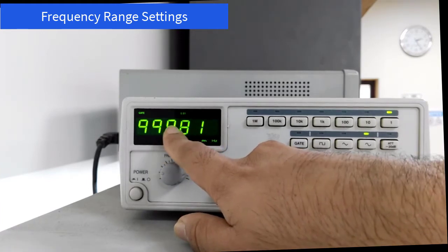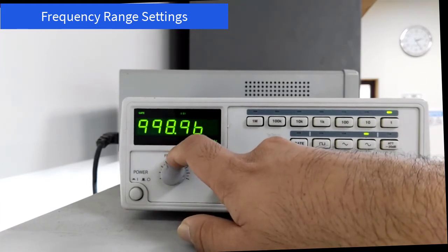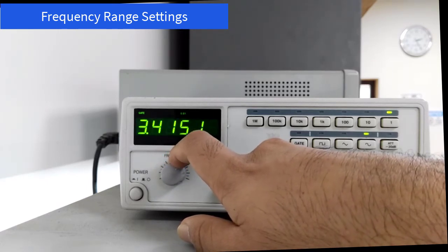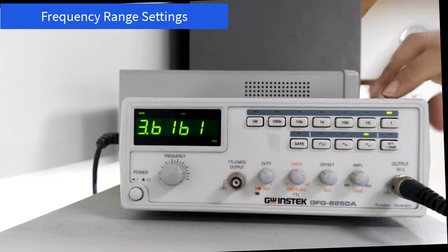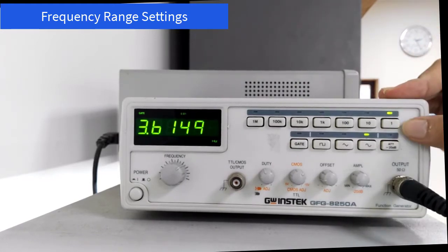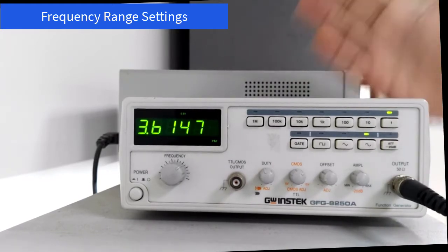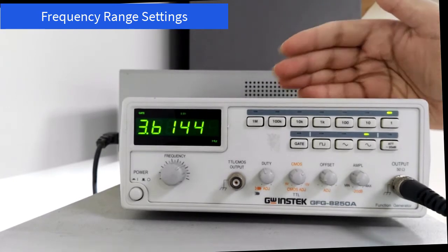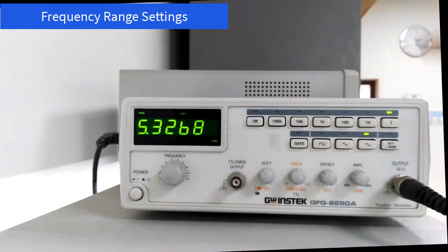As you rotate the knob, your frequency will change and you can set it to the required level. Each of these range buttons supplies a certain range of frequencies. This 1 hertz button will supply from 1 to around 5 hertz.